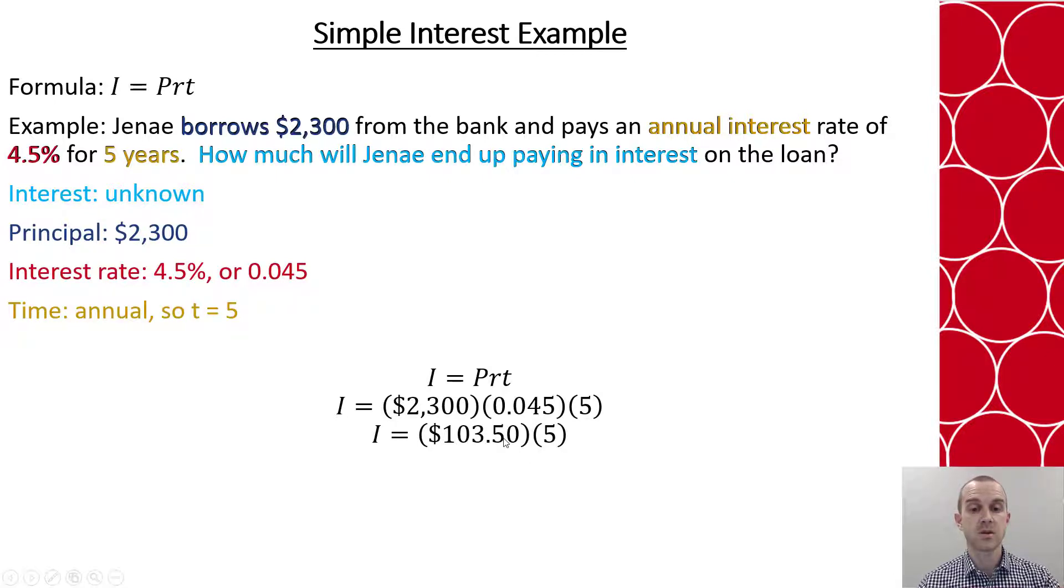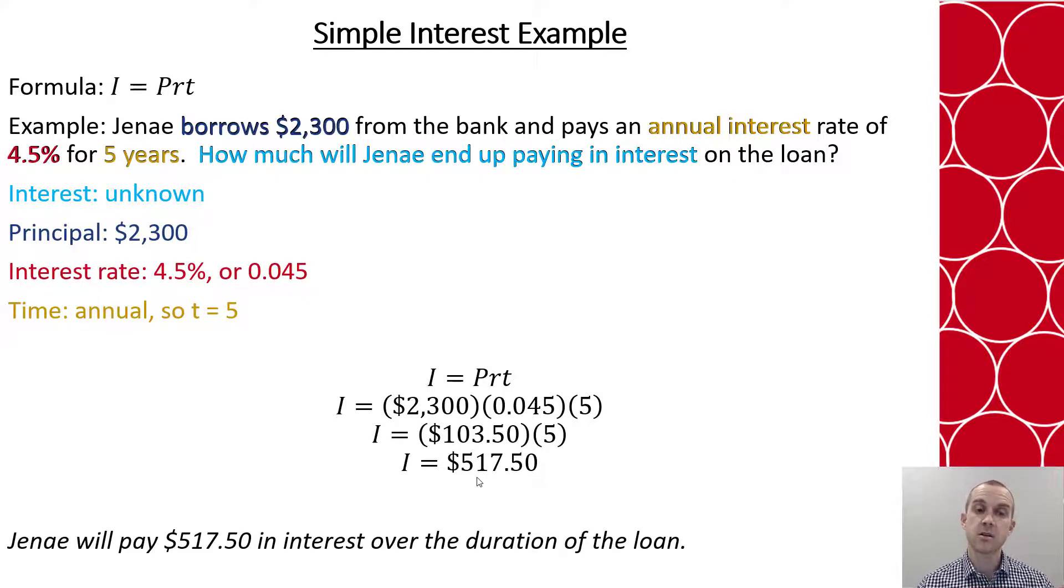Then I have $103.50 times 5 which will be $517.50. So that means that for this loan over the 5 years Janae will pay $517.50 in interest for this loan.